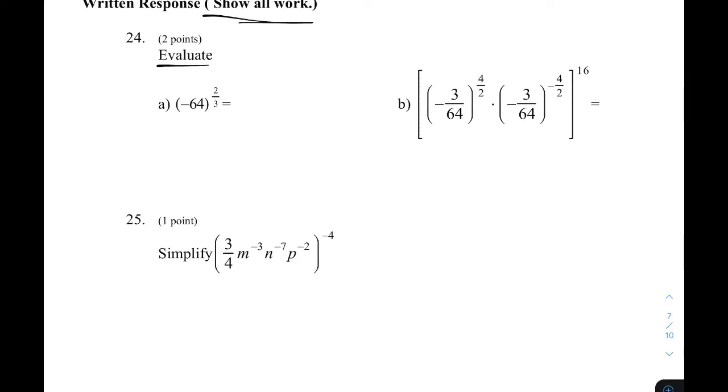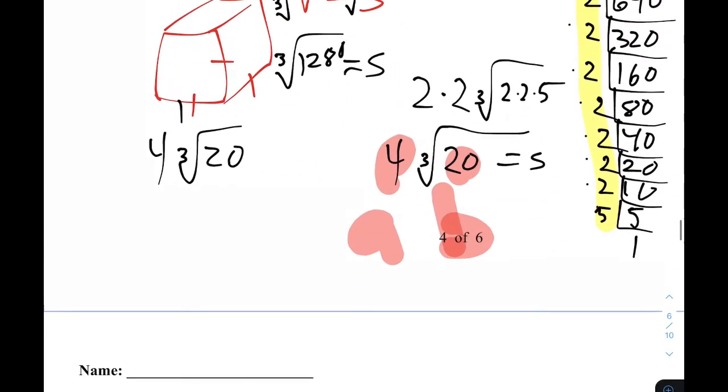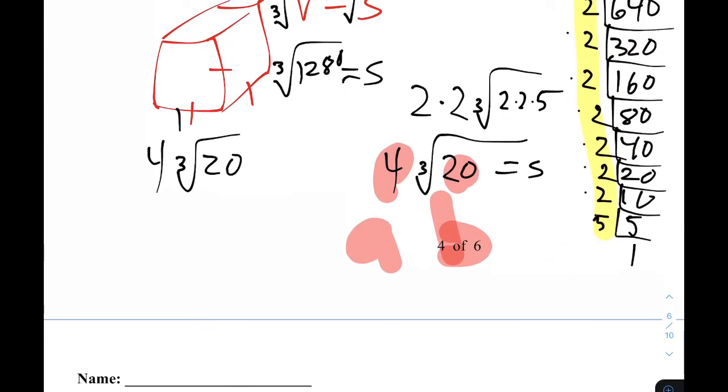So for A, the base is negative 64, it's in brackets, so that's the whole base, to the power of 2 thirds. We could write that 3 is on the bottom side, so that's the index of a radical. We could write that like this, the cube root of negative 64 squared, and the reason that I did that was because back here we had a 4 that was in the cube root, and 4 cubed is 64.